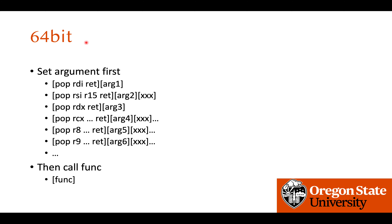However, in 64-bit, the operand of the pop instruction matters, because we need to pass argument values with specific registers. To pass the first argument we need a pop rdi and return gadget; for the second argument, pop rsi r15 and return; and for the third argument, pop rdx; for the fourth, pop rcx, and so on.